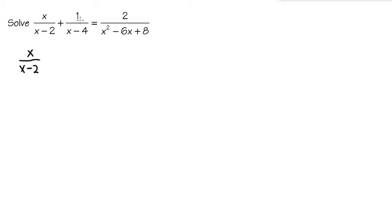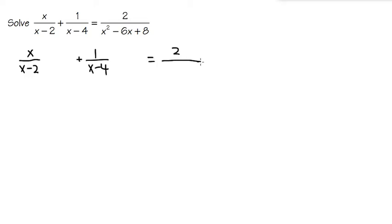For the second fraction, we have 1 over x minus 4. Once again, for the x minus 4, we cannot factor anything, so we'll just maintain how it is. So we have plus 1 over x minus 4, and we'll also leave some space. We have the equal sign, 2 on the top, over x squared minus 6x plus 8.